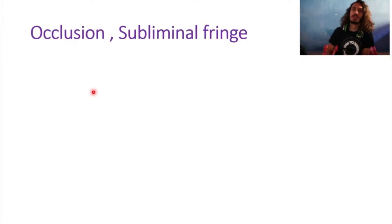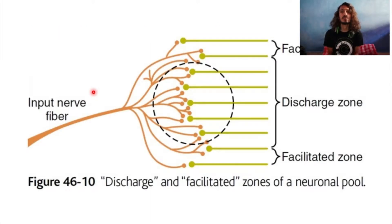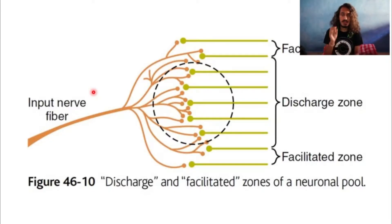In today's episode we're going to try to understand two properties of synapses: occlusion and subliminal fringe. Before we go to that, there is one small thing you need to understand. When a neuronal discharge occurs, the action potential train goes through the axon and it branches — the terminal buttons branch and go to different neurons.